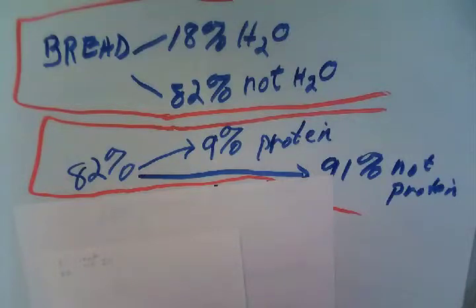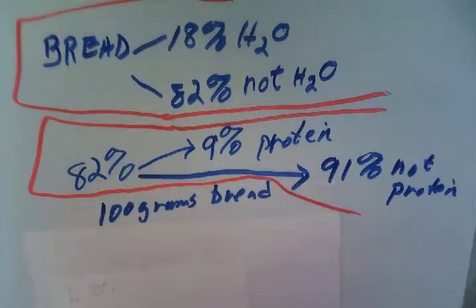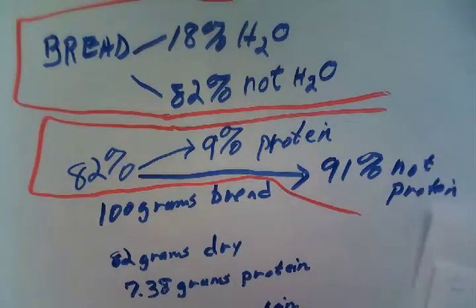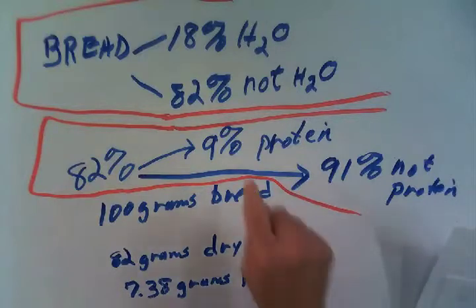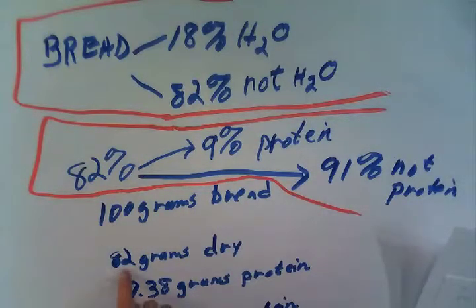When you're in a laboratory, you're kind of responsible to make sure things are right. This question, this is the way I did it. I say, okay, let's say we have 100 grams of bread. Of that 100 grams of bread, 82 grams of it is dry and 9% of it is protein. So I calculate that 9% of 82 grams is 7.38 grams of protein. So 7.38 grams in our 100 grams tells us that it's 7.38% protein and you look at that, that looks about right.